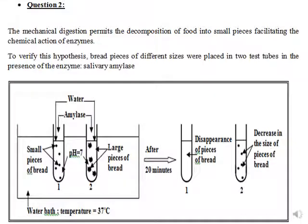Let's move to question number 2. The mechanical digestion permits the decomposition of food into small pieces, facilitating the chemical action of enzymes. To verify this hypothesis, bread pieces of different sizes were placed in two test tubes in the presence of the enzyme salivary amylase. As you know, salivary amylase works on starch to convert it into maltose.